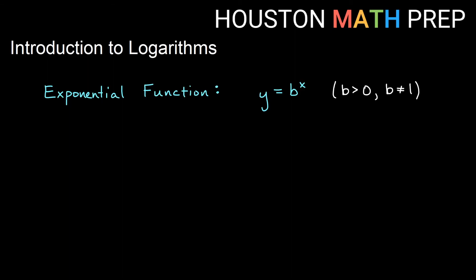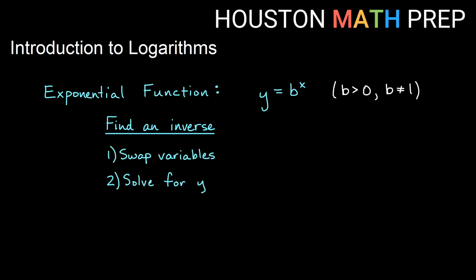So if we want to find the opposite operation for an exponential — basically find this function's inverse so it undoes what we do in this operation — the first thing we'll need to do is swap where the x and y variables are in this equation, and then once we've done that we can solve for y to get a nice looking equation that will be our inverse. If we swap the variables, y equals b to the x becomes x equals b to the y. Then the question becomes: how do we solve for y? How do I get this y out of the exponent? If we don't know what a logarithm is, we don't really know how to do this.